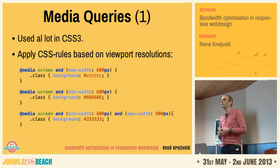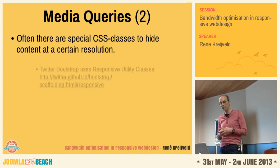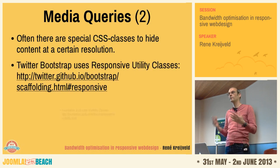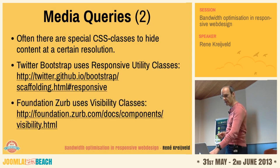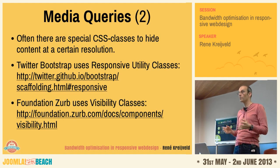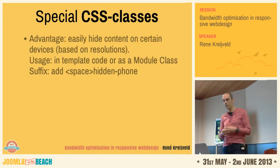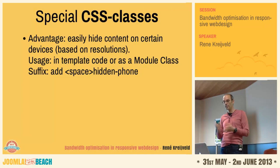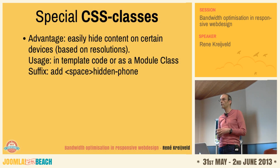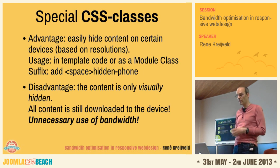Often there are special CSS classes to hide content at a certain resolution. Twitter Bootstrap uses responsive utility classes like 'hidden-phone' or 'hidden-desktop', and Foundation uses other classes to identify the width of the screen or viewport. The advantage is you can easily hide content on certain devices based on resolution — you can add 'hidden-phone' as a module class and it'll hide that element on smartphone resolution. The disadvantage is the content is only visually hidden. All content is still downloaded to the device, which is unnecessary use of bandwidth.